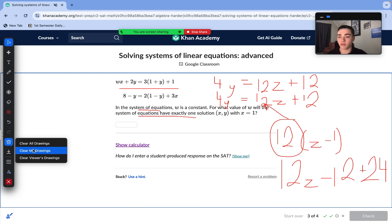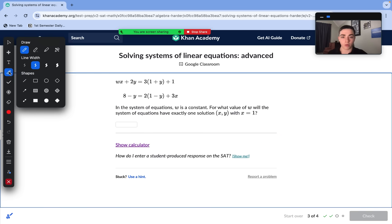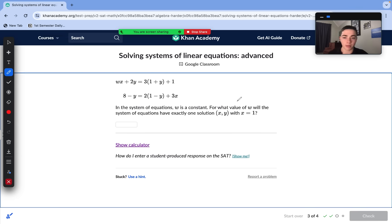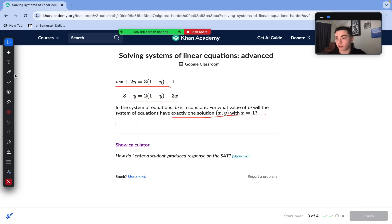On to our next question here. Very similar. So for what value of w will the systems of equations have exactly one solution with x equaling 1? So we need to spot here one solution. Our variables do not cancel out. So that's pretty much all we need to look here. Once again, these are in a little bit more difficult format, but we can just break it down into simpler forms. What I would do, multiply everything out, combine like terms. So get rid of our parentheses.